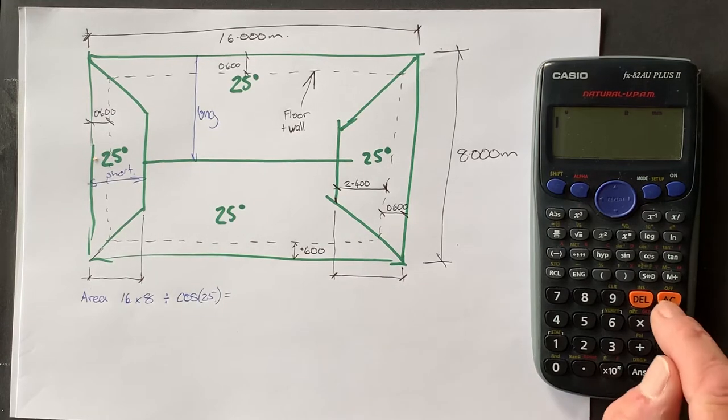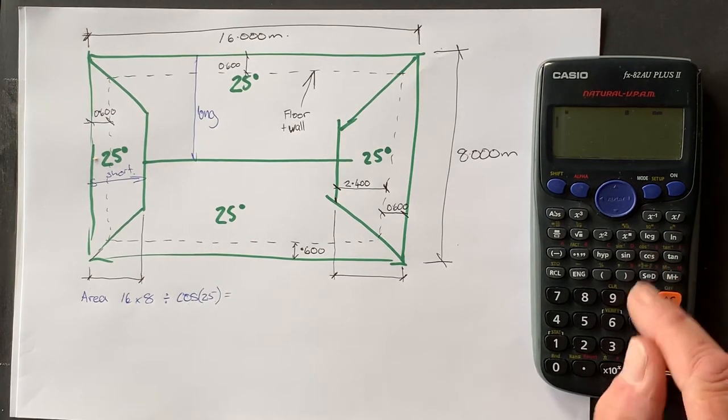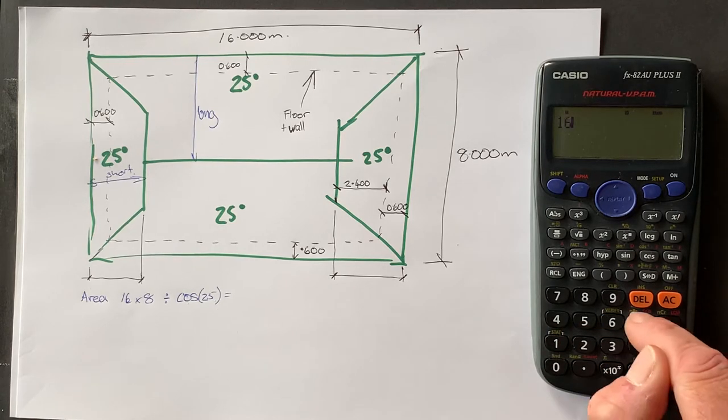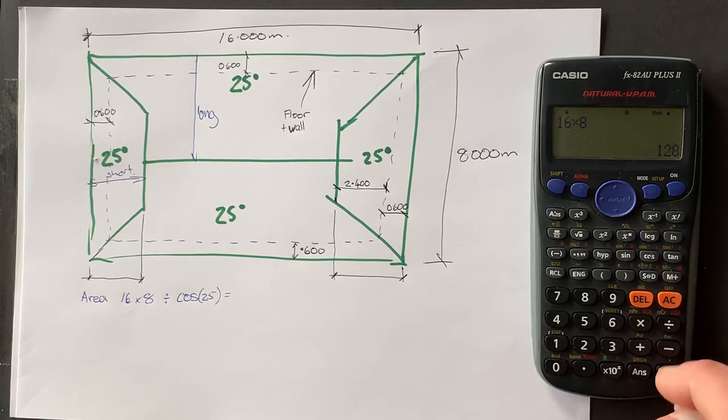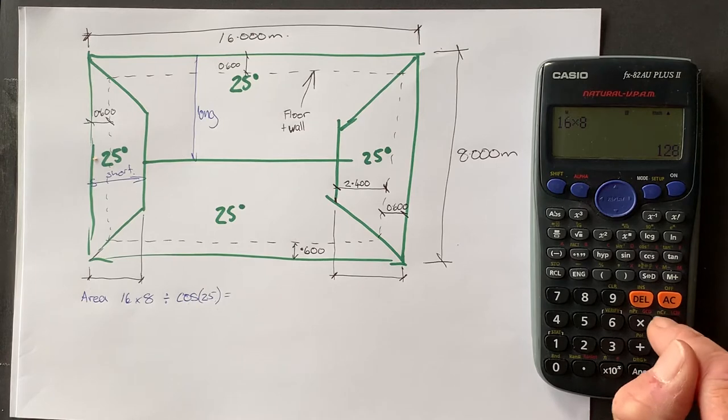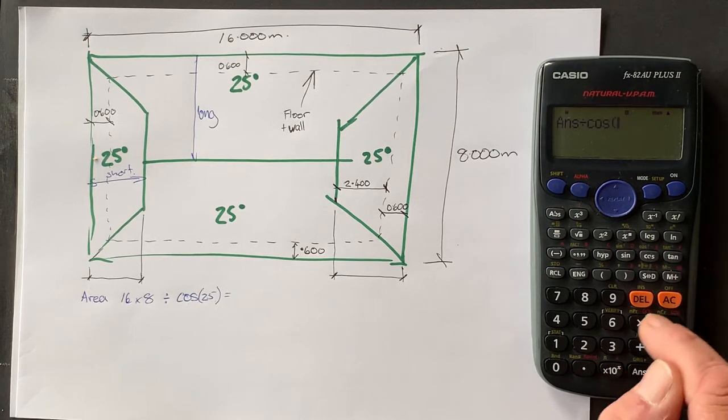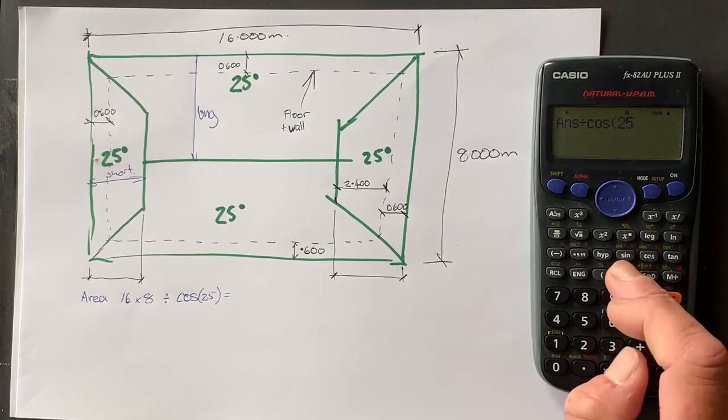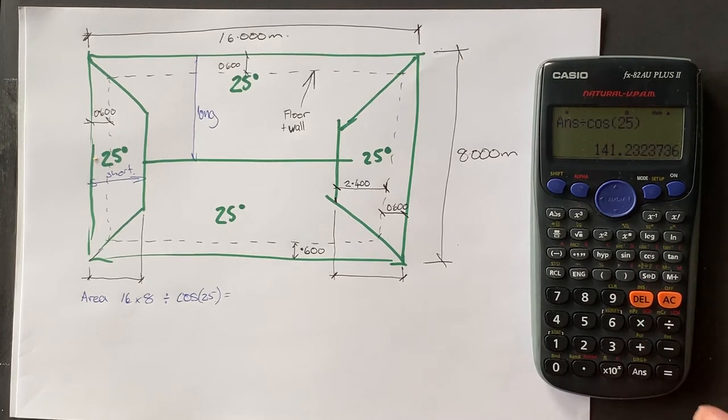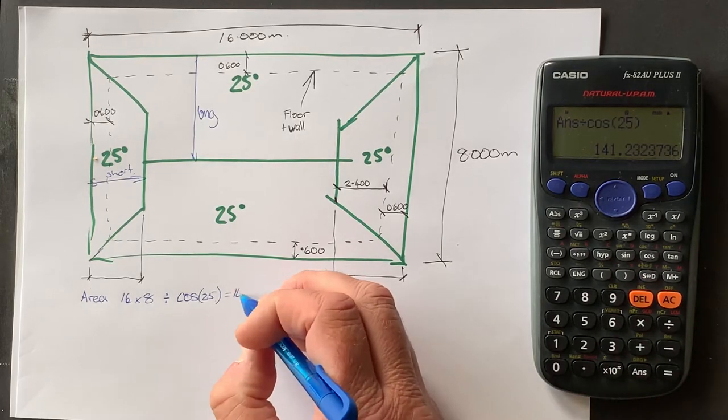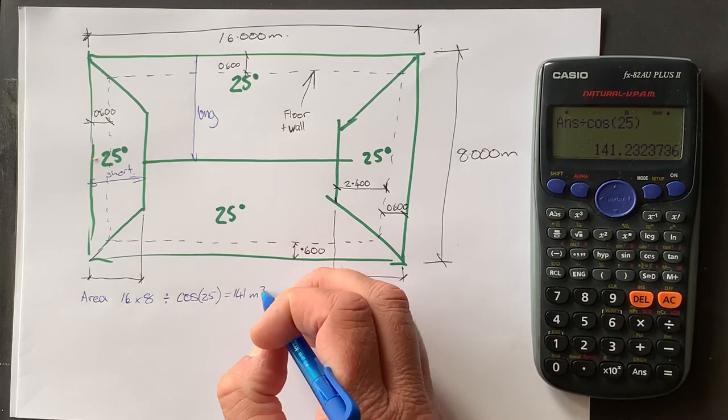And so if we say 16 times 8 equals 128. And then we divide that by cosine 25 degrees. And we've got 141 meters of paper.